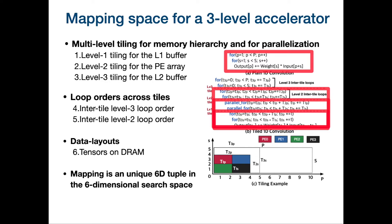We then tile again the outer loops to spread multiple level 1 tiles across the processing elements — called level 2 tiling. Finally, we tile the outer loops again such that the required data fits into the L2 buffer — called level 3 tiling. The next aspect of the mapping space is inter-tile order, which represents the execution order of the tiles. For example, inter-tile level 3 loop order represents the order in which the level 3 tiles are fetched from DRAM. The third aspect of the mapping space is data layouts, which captures the layouts of the tensors on the DRAM.